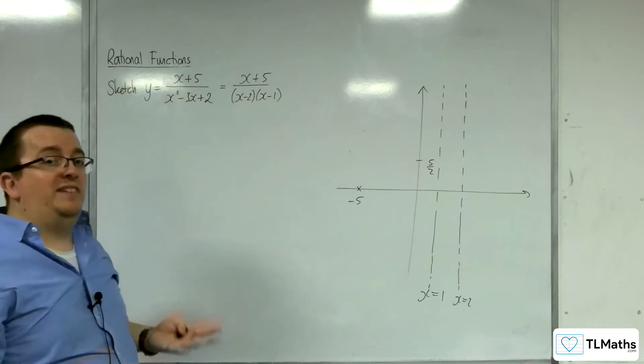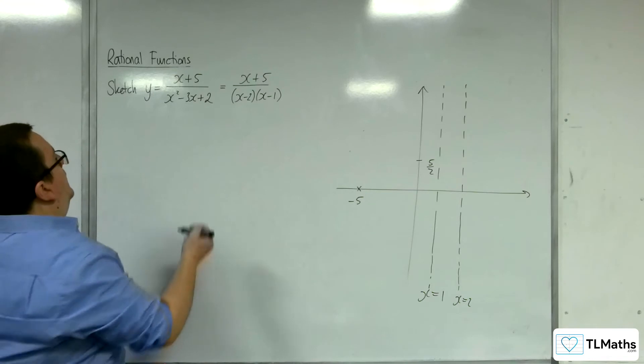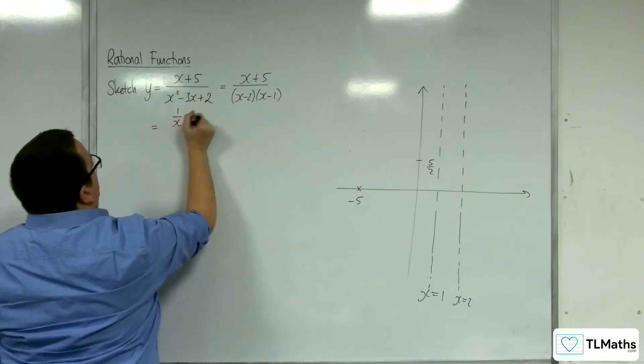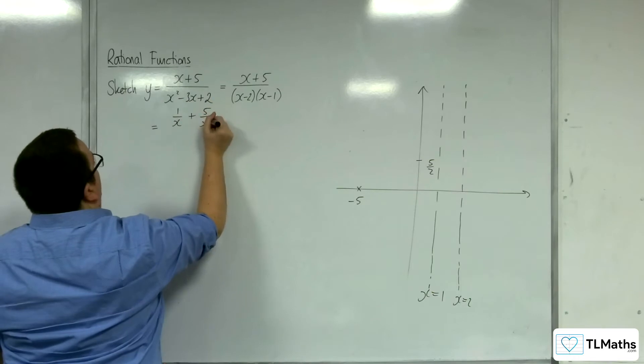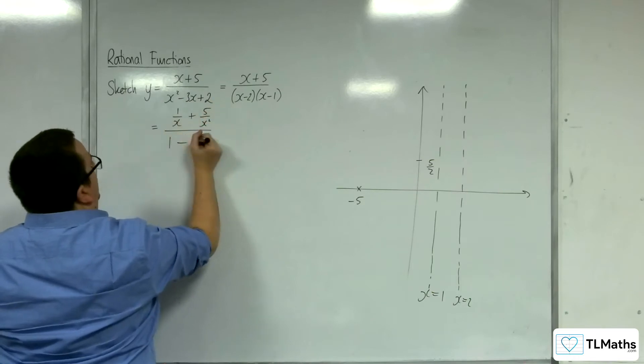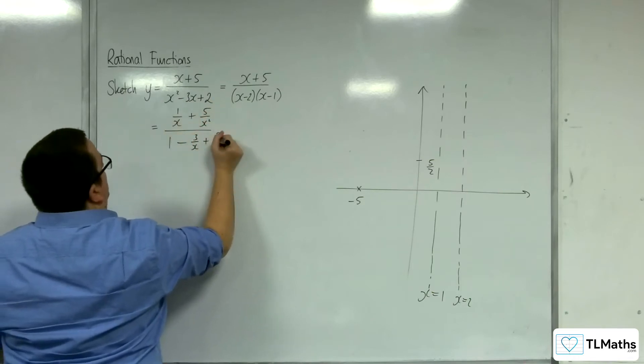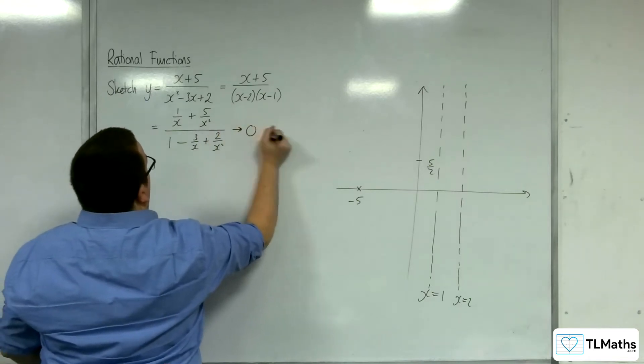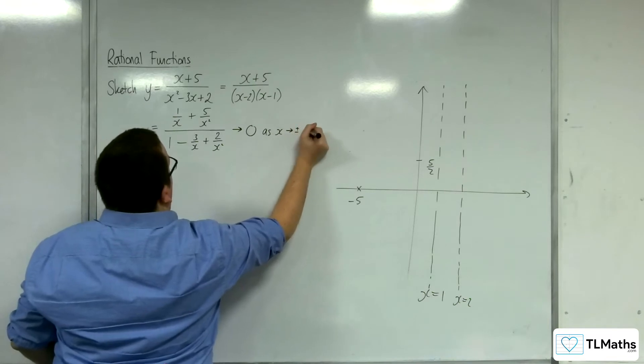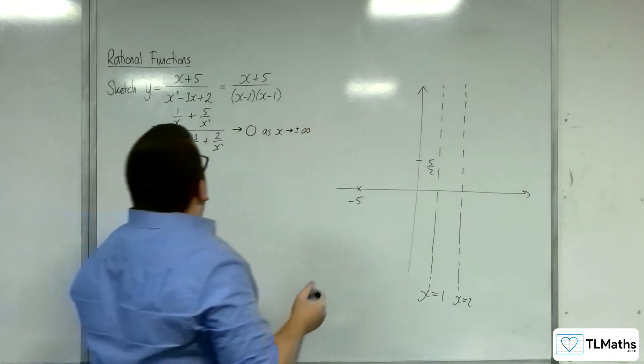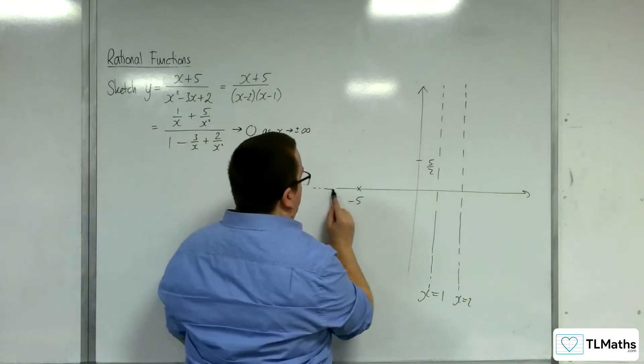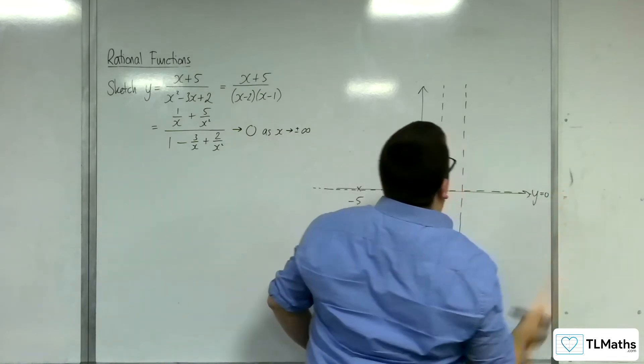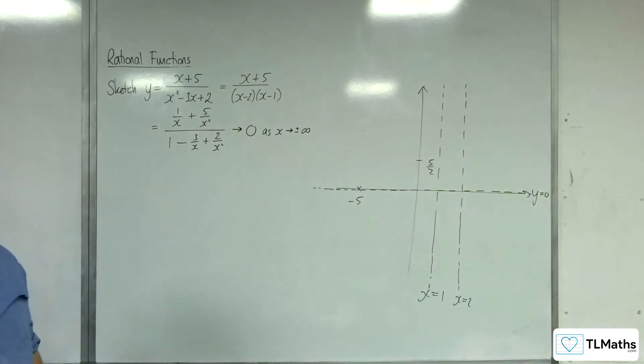You can show this by dividing top and bottom by x squared, and getting 1 over x plus 5 over x squared over 1 take away 3 over x plus 2 over x squared. And clearly this is going to tend to 0 as x tends to positive or negative infinity. So that means that y equals 0 is a horizontal asymptote.